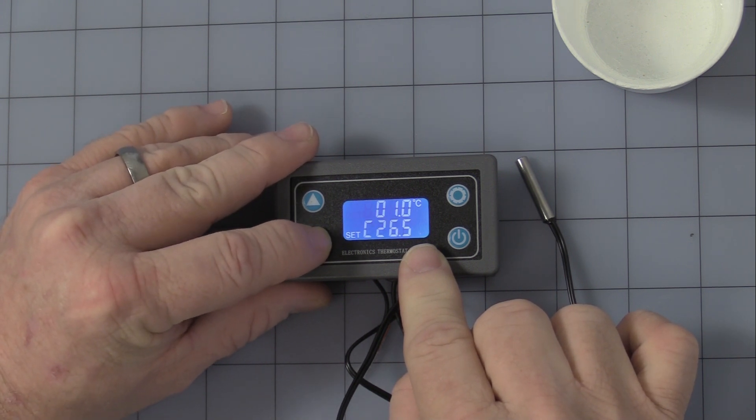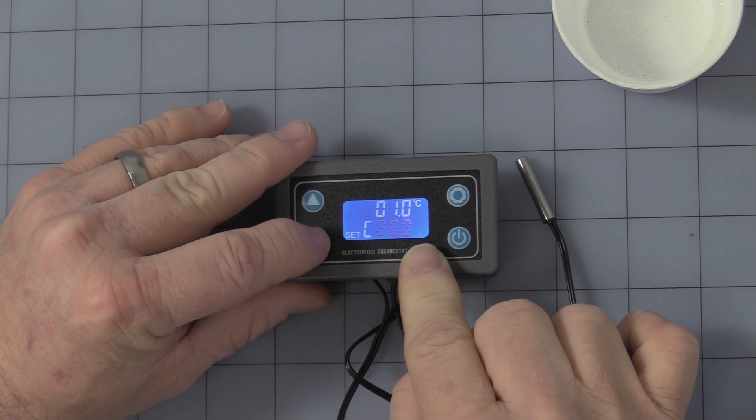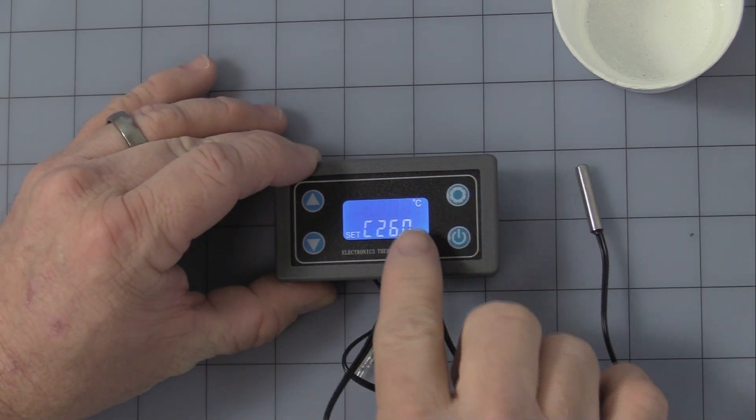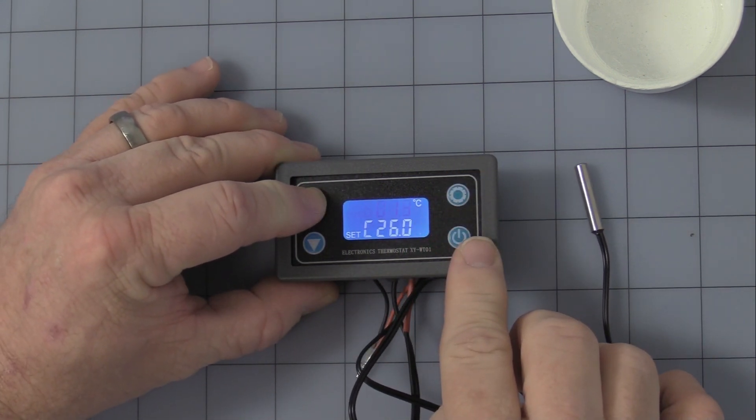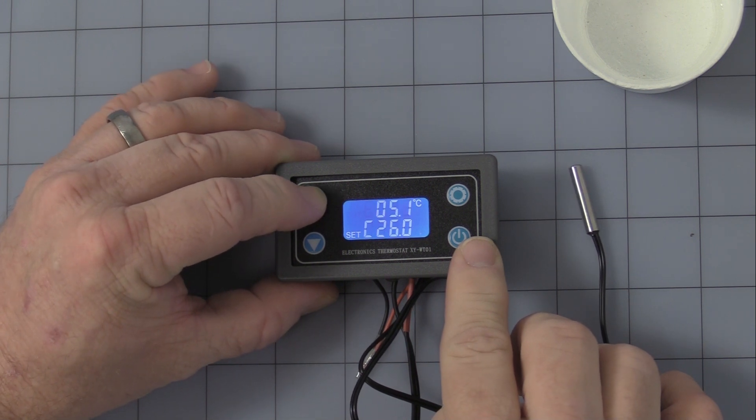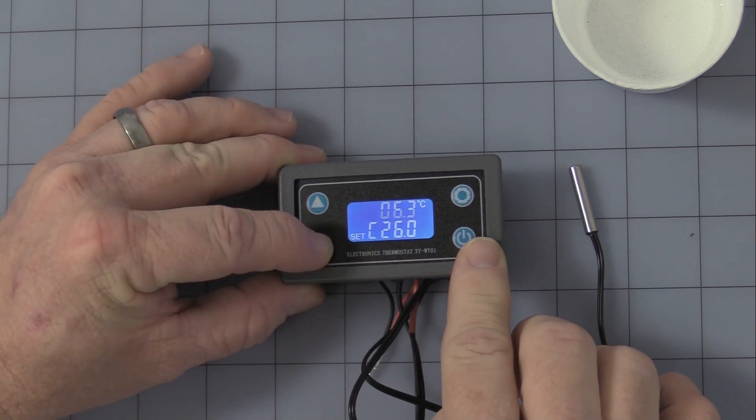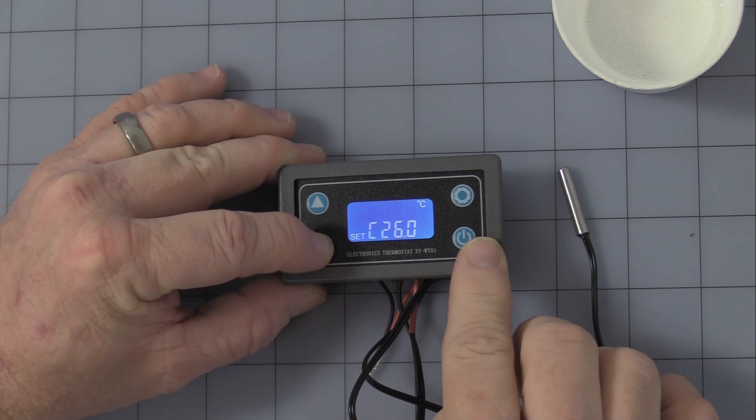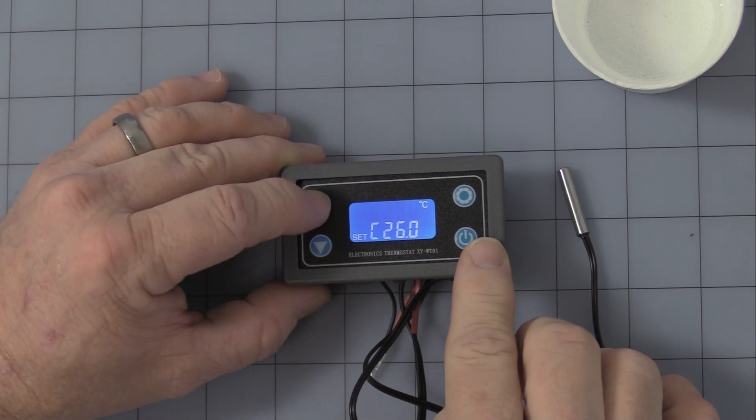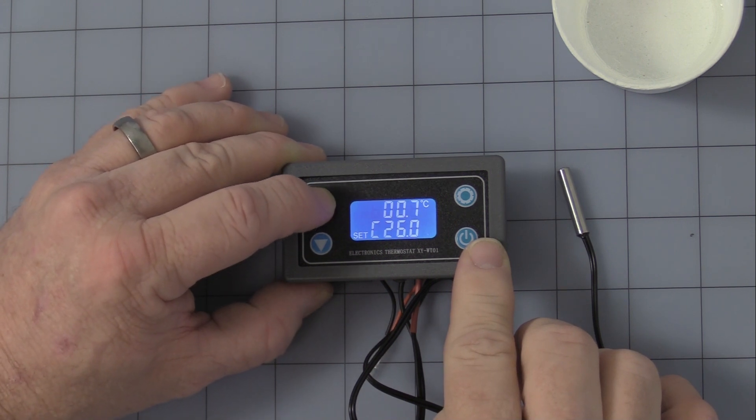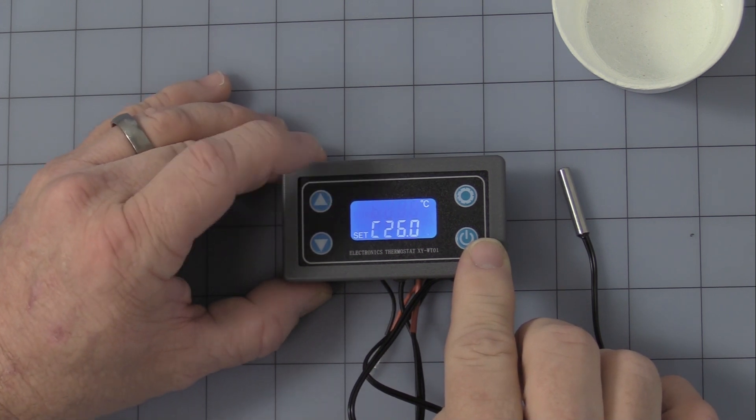Press it again and this is your hysteresis setting. Now I have it set at one degree, but you can increase it or decrease it as much as you like. I imagine if you get it too low down to zero it would chatter a lot, but one degree seems to be a good starting point for me. You can set it to wherever you would like. Simply leave it alone and it will go back into operation mode.